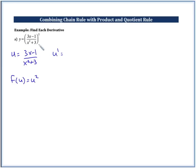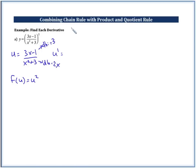For u prime, we're going to have to use the quotient rule. So we want to find the derivative of our high, and that's just going to equal 3. And we want to find the derivative of our low, and that equals 2x. So remember: low d high minus high d low over low squared.